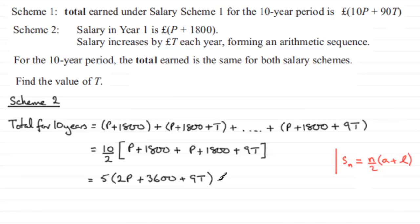That's our total for 10 years under Scheme 2. We know that the totals are equal for both schemes, so since the totals are equal, 10P plus 90T has to equal what we've just worked out.